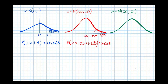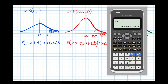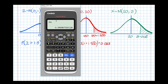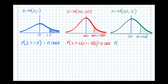Let's do the same for this final green distribution. The mean is 20, and 1.5 standard deviations from the mean is 20 plus 1.5 root 5. Putting that in the calculator: lower bound is 20 plus 1.5 root 5, upper bound is still infinity, standard deviation is root 5, and the mean is 20. We get the same again — the probability that X is greater than 20 plus 1.5 lots of the standard deviation is again 0.0668.